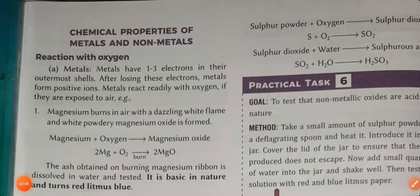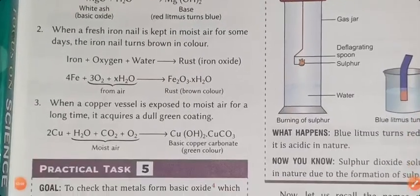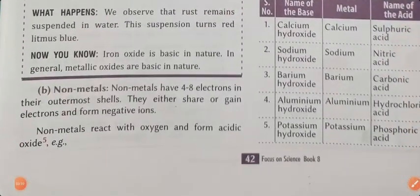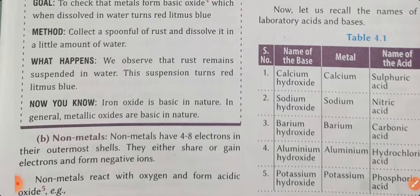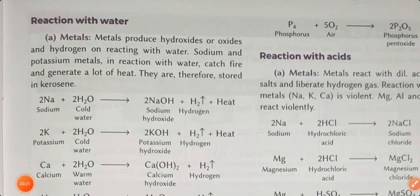So students, as you know, when metal reacts with oxygen, it is basic in nature and turns red litmus blue. And when non-metal reacts with oxygen, it is acidic in nature and turns blue litmus red. This is the important point about metals and non-metals when reacting with oxygen.